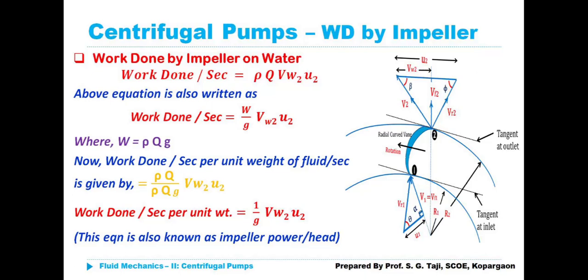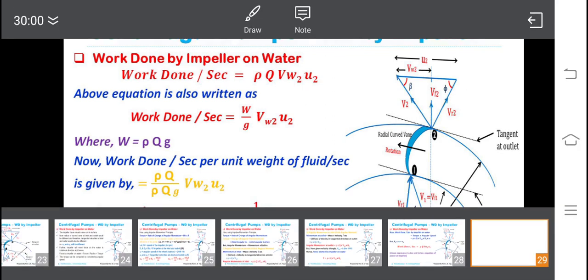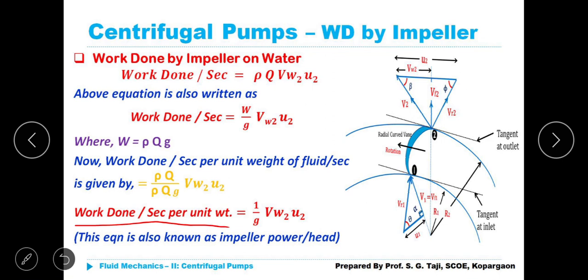Hello friends, very good morning. Had your breakfast? Fine. Yesterday, we learned what is the work done by impeller on water in case of centrifugal pump. We derived the equation and got work done per second per unit weight. Work done per second per unit weight is equal to 1 upon G, Vw2 U2, as Vw1 takes value 0. This head is also known as impeller power per head or also known as Euler's head.